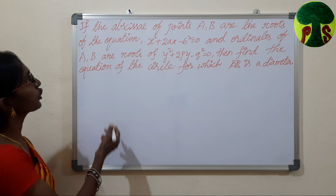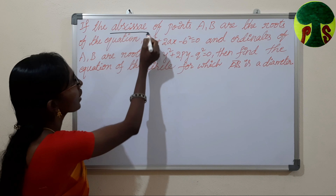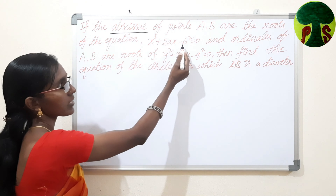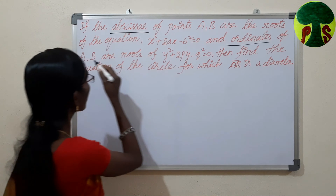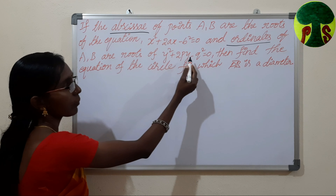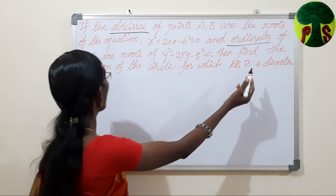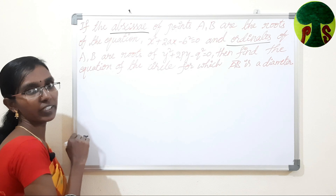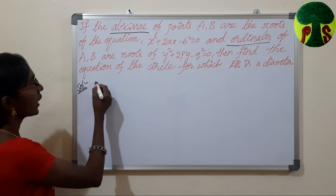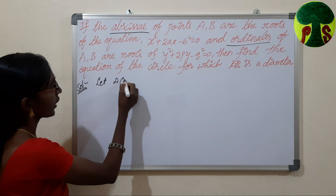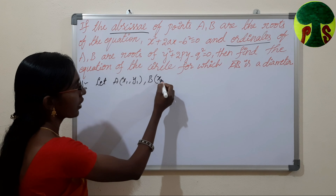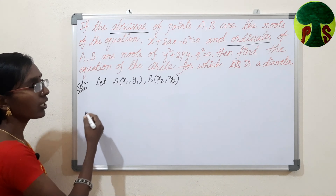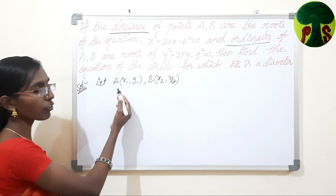Let us solve another problem. If the abscissae of points A and B are the roots of the equation x squared plus 2ax minus b squared equals 0, and the ordinates of A and B are roots of y squared plus 2py minus q squared equals 0, then find the equation of the circle for which AB is a diameter.